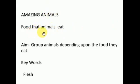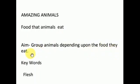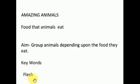Subtitle: Food that Animals Eat. Aim: Group animals depending upon the food they eat. What is our aim today? Group animals depending upon the food they eat. Today we have one keyword: Flesh. What is the meaning of flesh? Flesh means the soft part of the body of a person or animal.